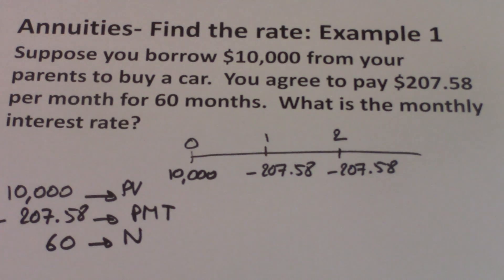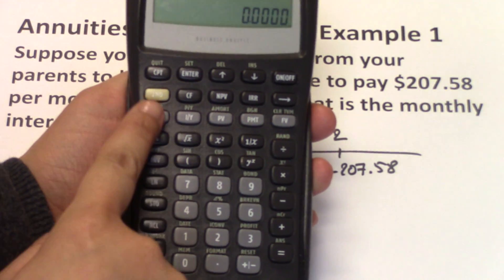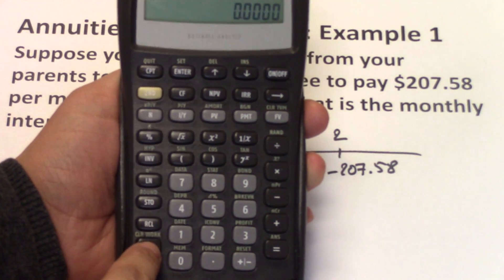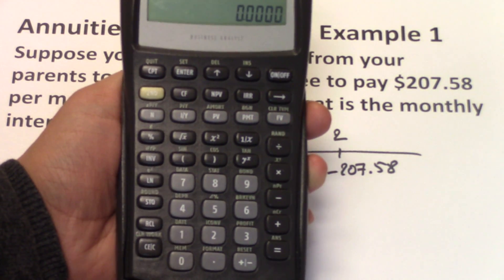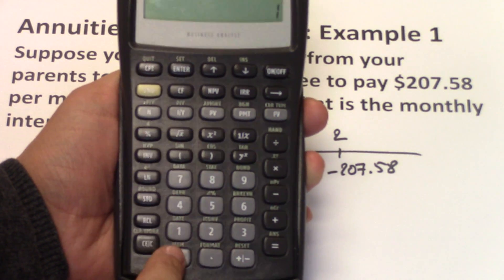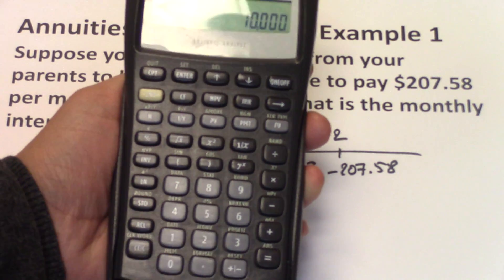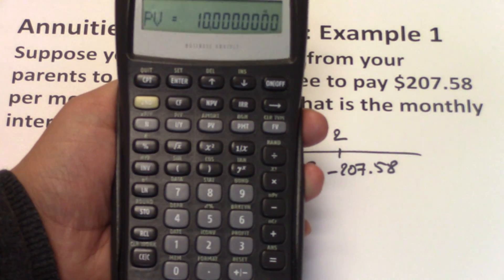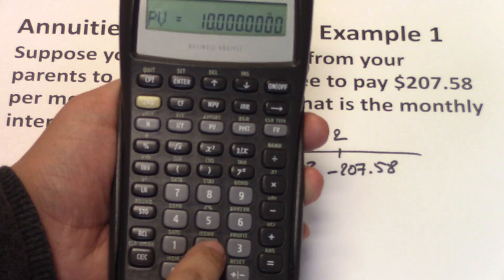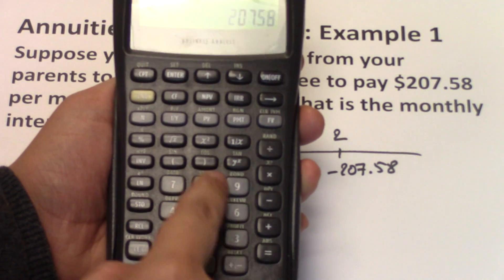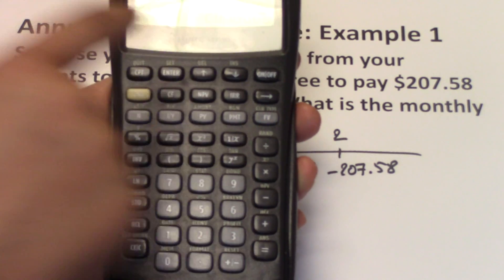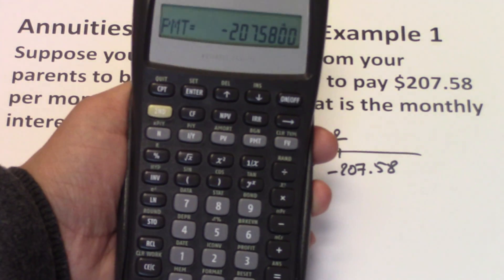First, we clear our time value of money calculations: press Second FV, then Second CLR. Then enter 10,000 as your PV and hit PV. Next, enter 207.58, make it negative, and enter it as your PMT.